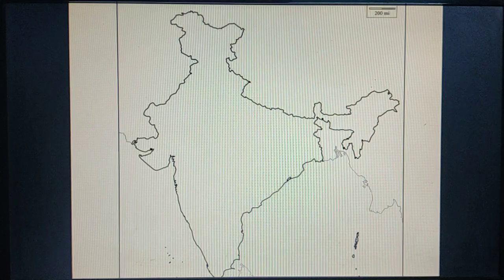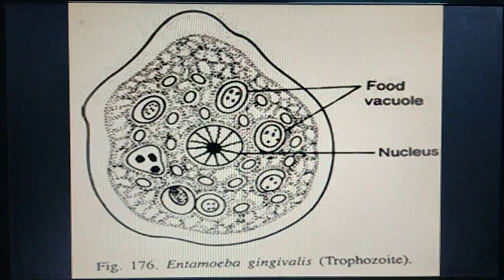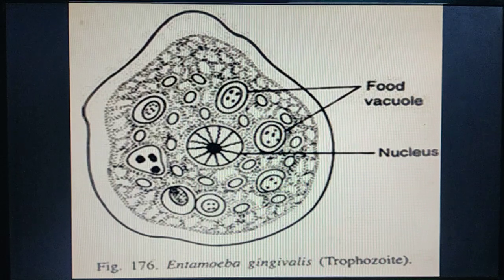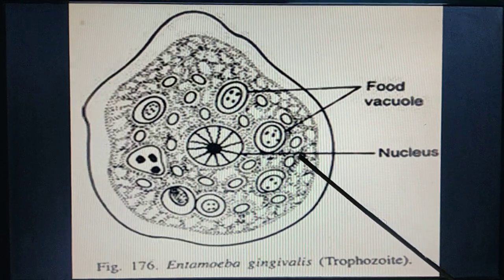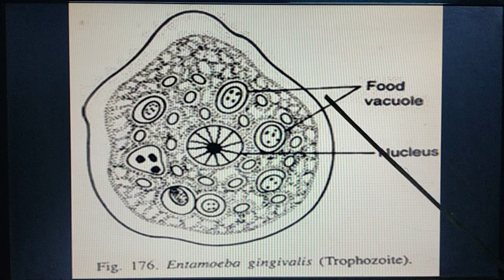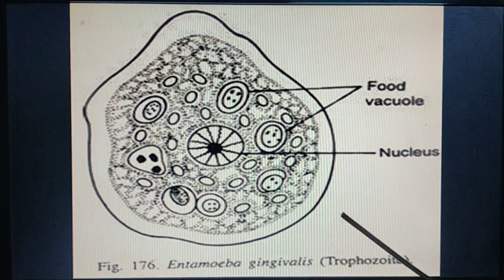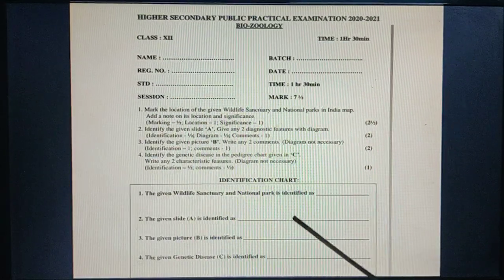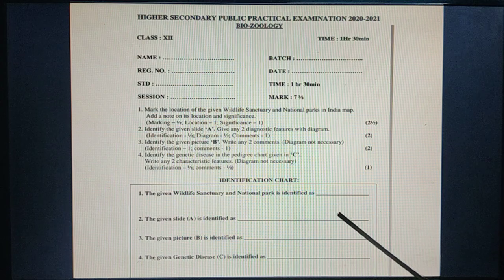The map will be given to you attached to the answer paper. For question two, I will show you the picture — for example, Entamoeba histolytica. You can identify it from the picture. Even if there are no labeled parts, you can identify it as Entamoeba histolytica based on the visible features.